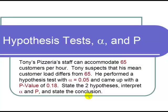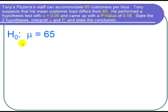So let's start out with the null hypothesis. We're testing the claim that the mean customer load differs from 65. Since we have a mean, the null hypothesis H naught is going to be mu equals 65 because that's the claim that we're testing.